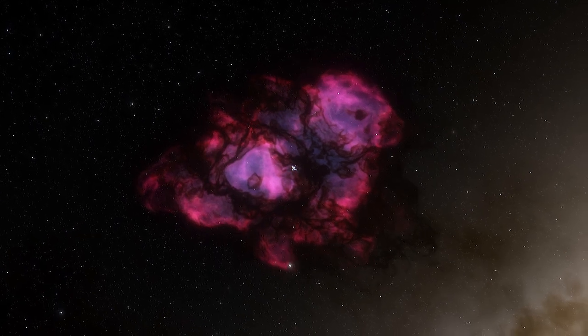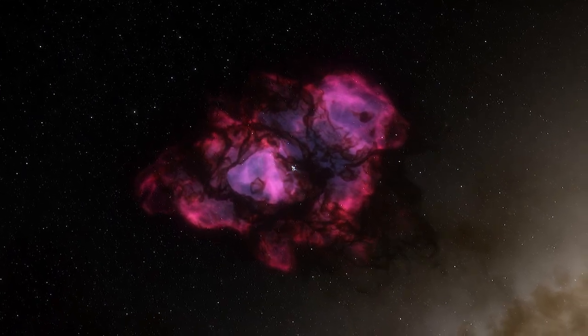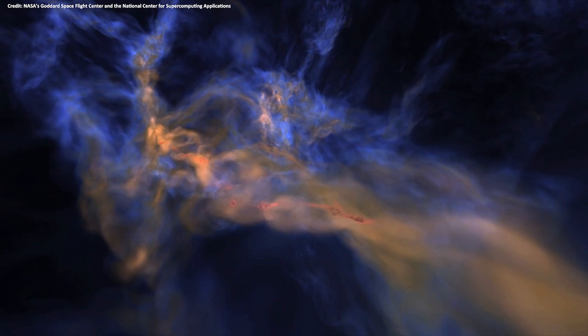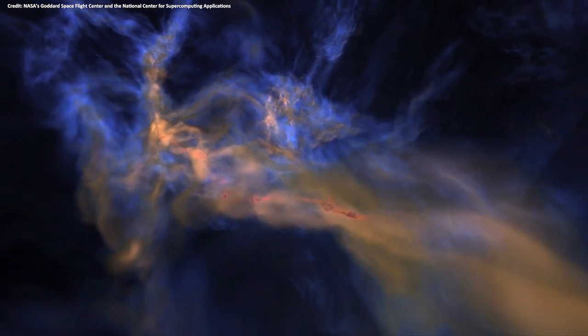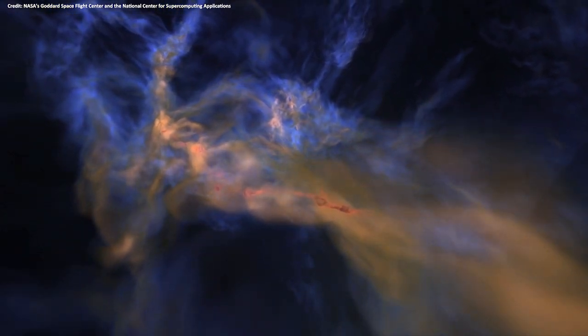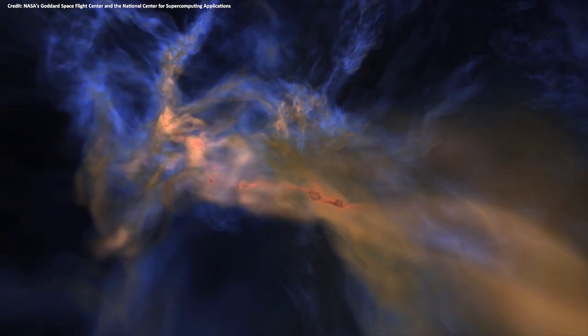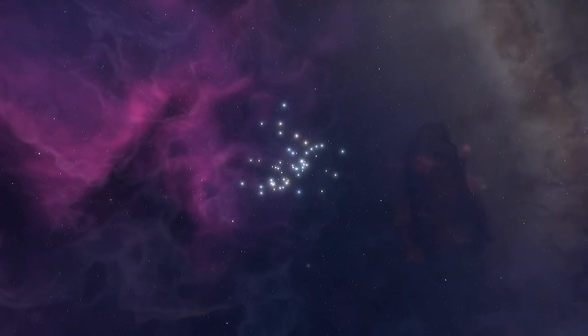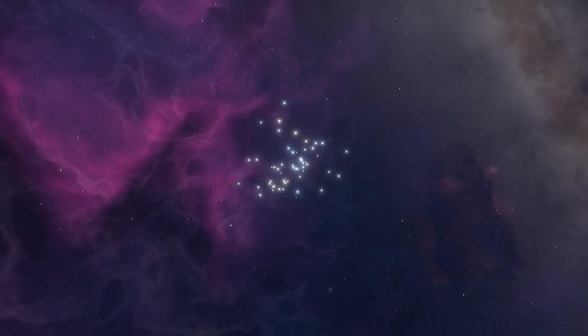Gravity contracts the gas and dust in an interstellar cloud. Clumps form and start to collapse even further in a process known as fragmentation, which leads to a group of stars forming at once.